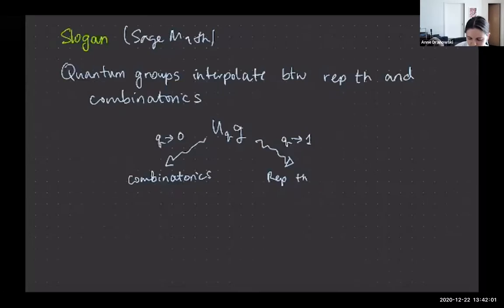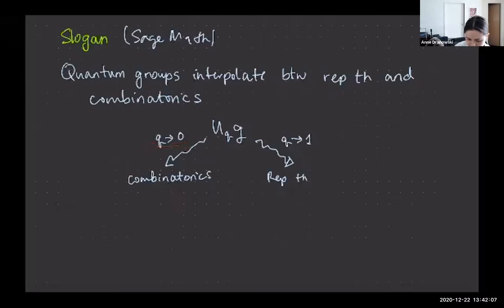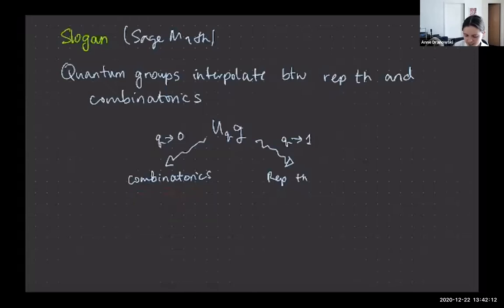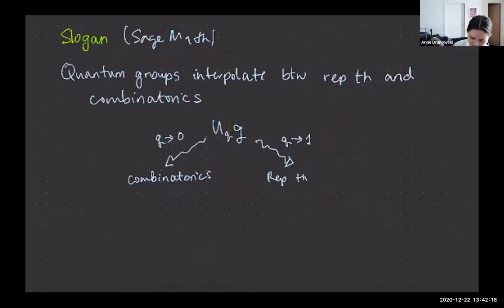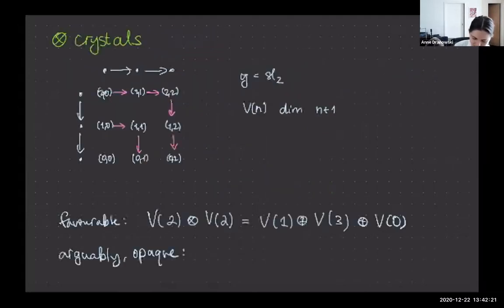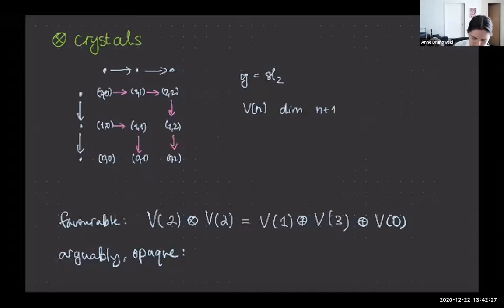The problem with the naive picture is that in general, even for the adjoint representation, the eigenspaces are not one-dimensional. There's nontrivial geometry involved — choices needed to extract raw combinatorics. What fixes this is considering quantum groups. The theory due to Kashiwara looks at representations of U_q(g); as q goes to zero, you recover the combinatorial picture. Quantum groups interpolate between representations and combinatorics: taking q to zero gives crystals, taking q to one gives the representation — though we won't discuss that side today.